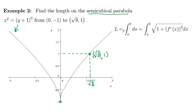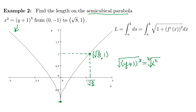We could integrate using the arc length formula with respect to x. If we do that, we'd have to solve this equation for y. So we've got y plus 1 cubed equals x squared, then we take cube roots on both sides. The cube root and the cube cancel, giving us y plus 1 equals x to the 2/3 power, so y equals x to the 2/3 minus 1.